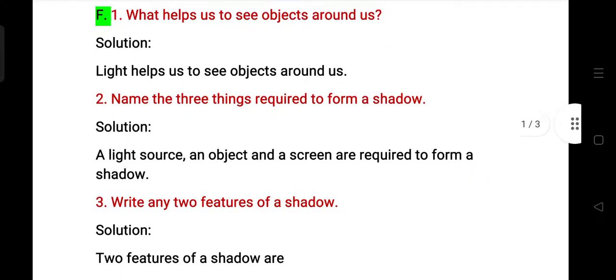Name the three things required to form a shadow. Three things required to form a shadow: a light source, an object and a screen.